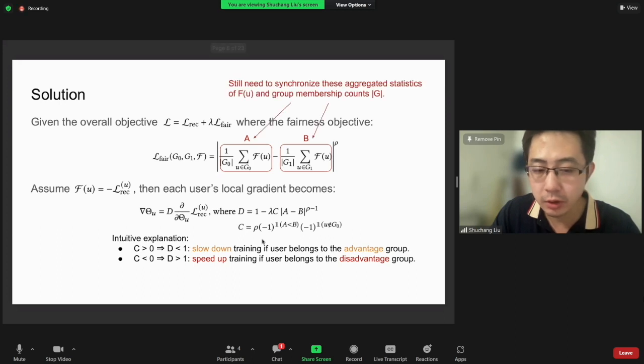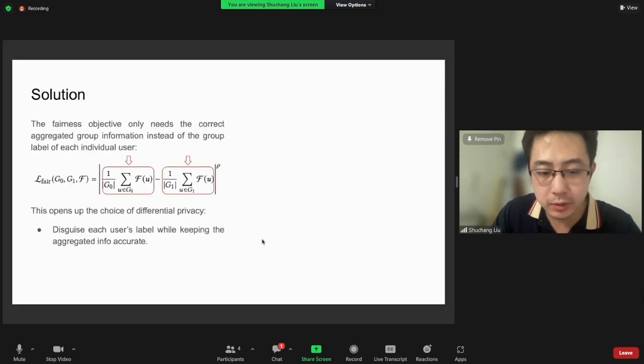Now the only thing left to communicate between the devices and the server is the aggregated information of user group performance. This group average performance is our aggregated statistics, so this indicates that we can apply differential privacy to communicate this information with disguise on each user, but the aggregated information is still accurate.